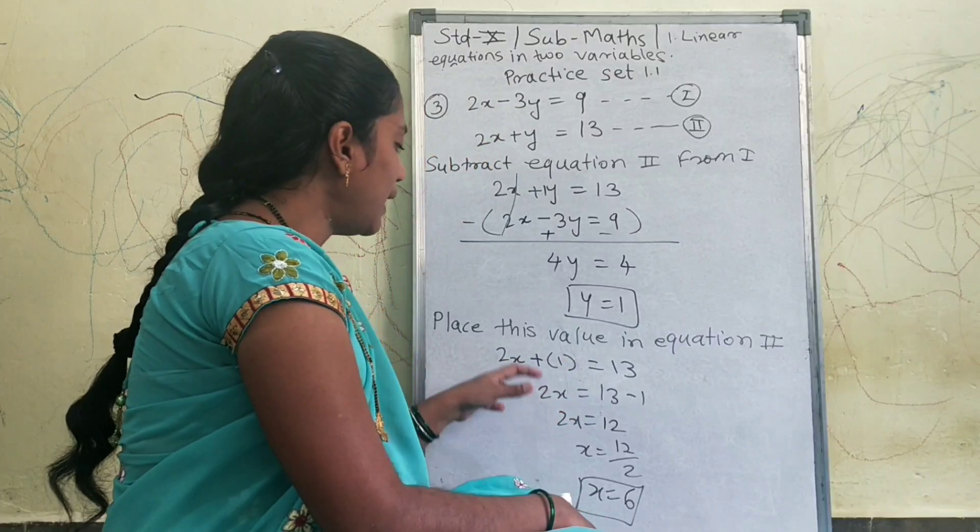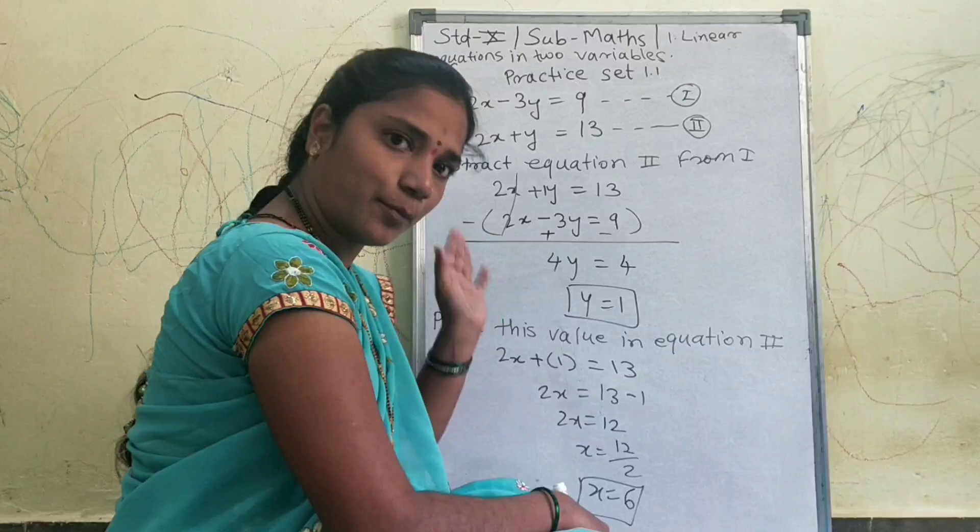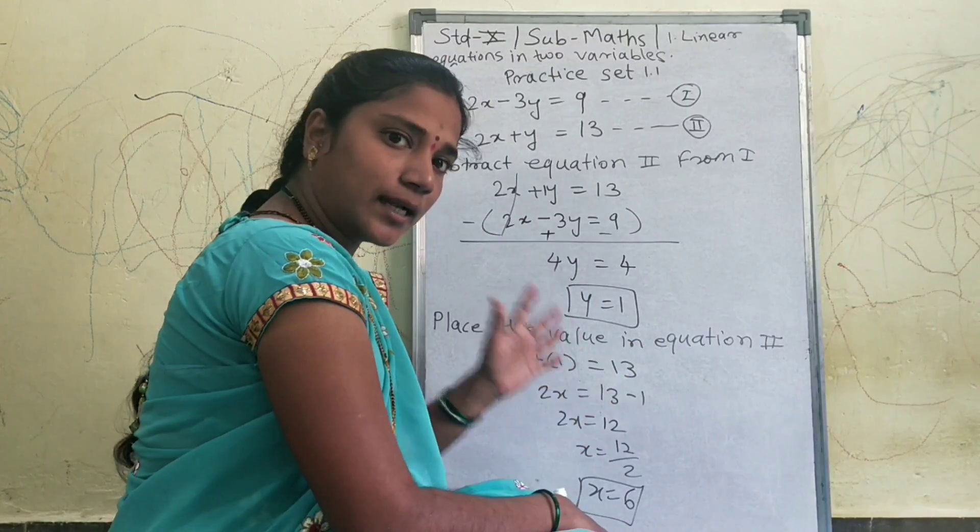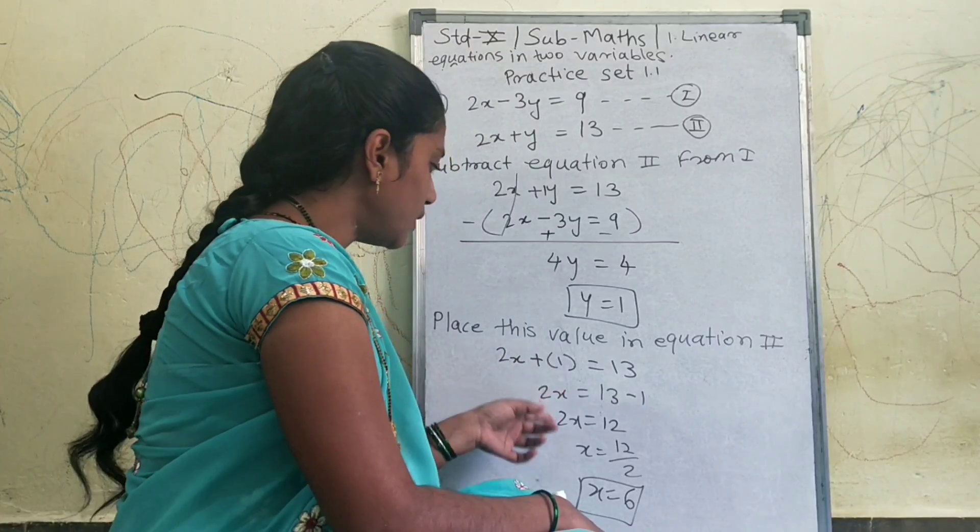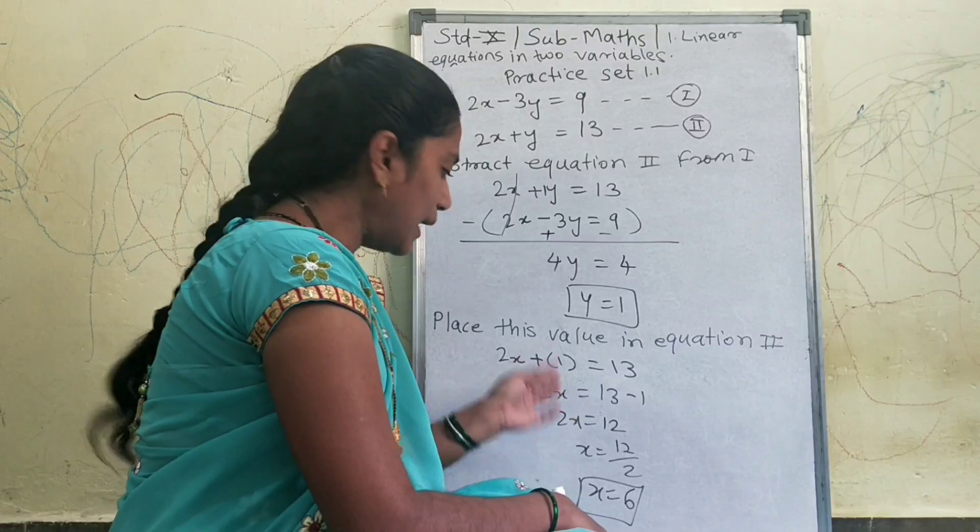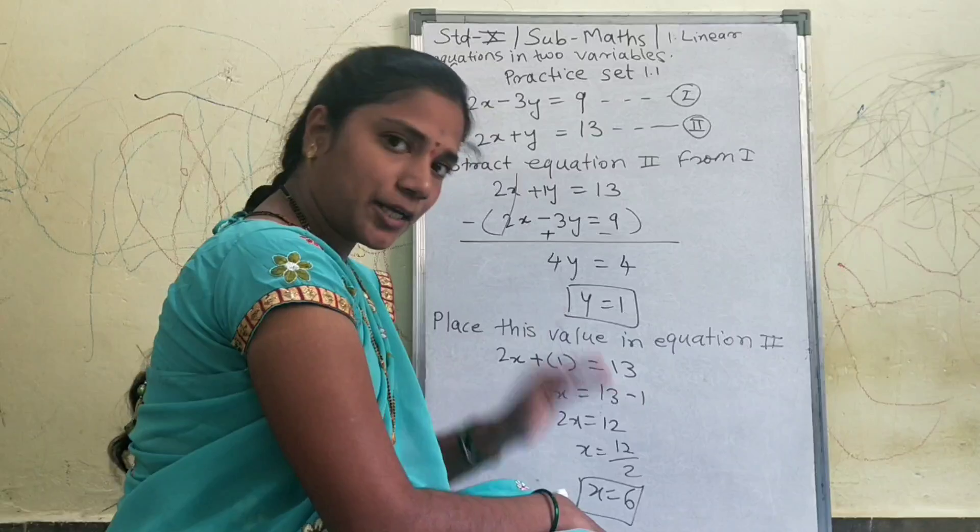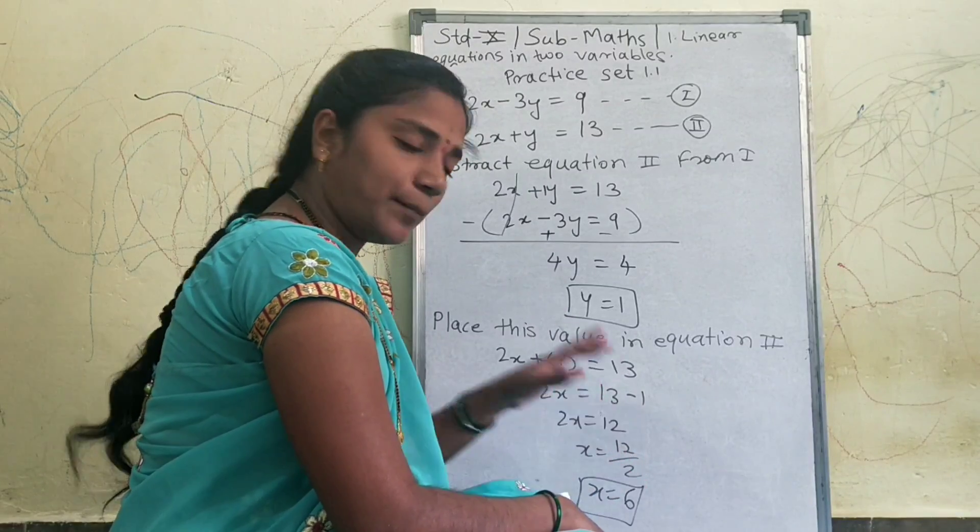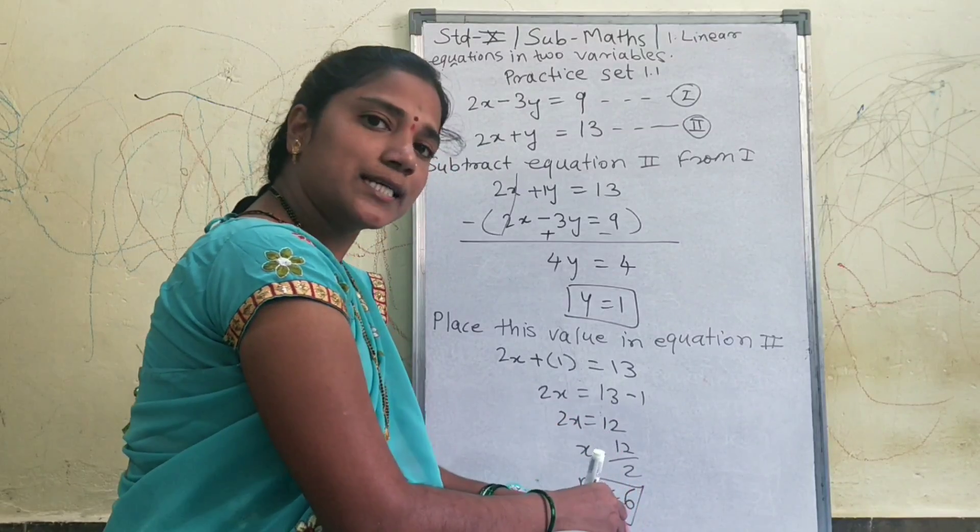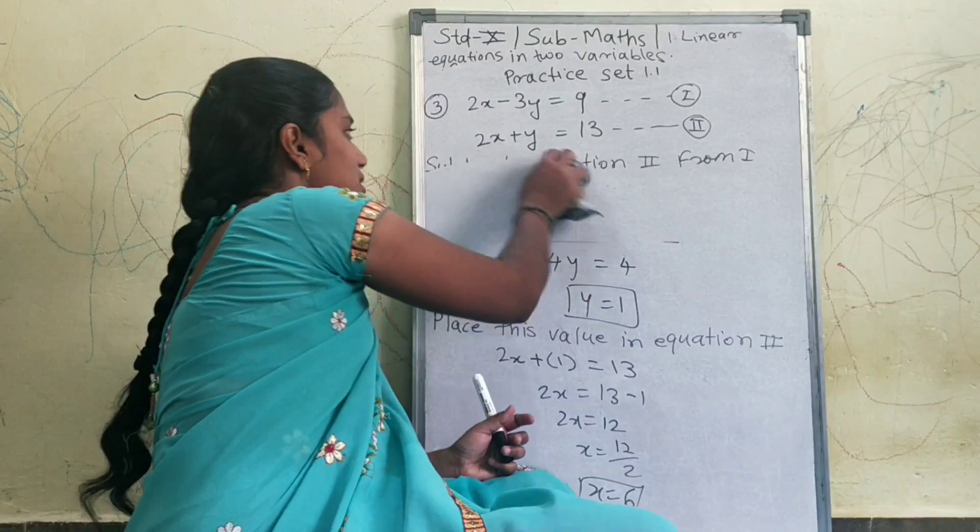2x as it is plus y, y's value is 1, where y is I put the value 1, is equal to 13 as given in equation 2. Equal to sign's opposite, positive becomes negative. 2x is equal to 12. x is here, 2 is in multiplication, equal to sign's opposite becomes division, 12 divide by 2 is 6, that is why x is equal to 6.